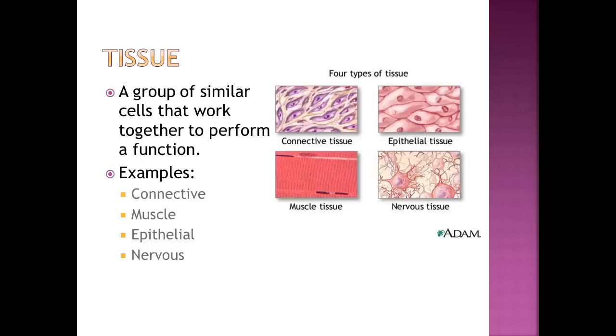The next level of organization is the tissue. A group of similar cells that work together to perform a function are called tissues. In the human body, we have many different kinds of tissue. We have connective tissue, which is the stuff that really holds our body together. Epithelial tissue is our skin cells. Nervous tissue, everything from our nerves to our brains. And muscular tissue or muscle tissue. Those are all made of similar cells that work together to do something specific.